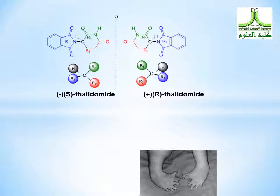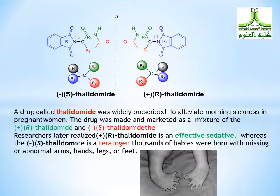The two structures are enantiomers: S-thalidomide and R-thalidomide. A drug called thalidomide was widely prescribed to alleviate morning sickness in pregnant women. The drug was made and marketed as a mixture of R-thalidomide and S-thalidomide. Researchers later realized that R-thalidomide is an effective sedative whereas S-thalidomide is a teratogen. Thousands of babies were born with missing or abnormal arms, hands, legs, or feet, as illustrated by this picture.